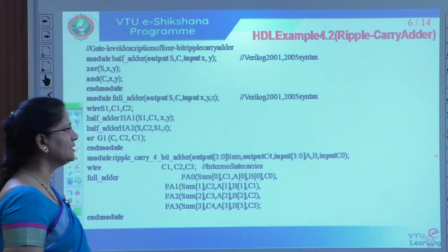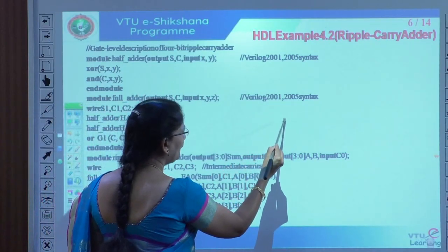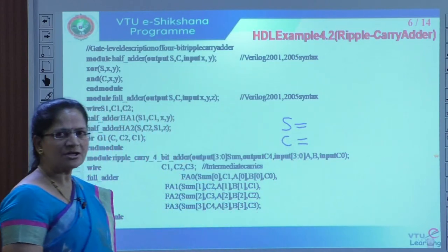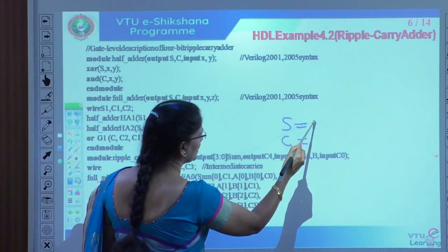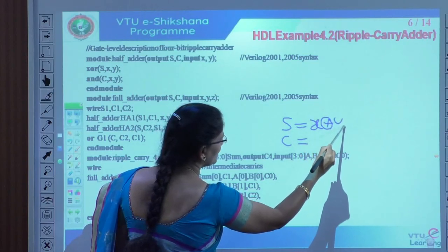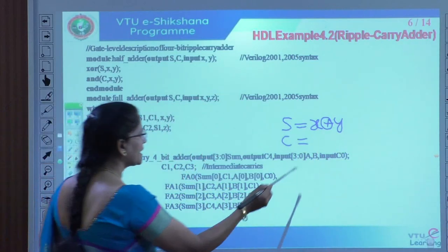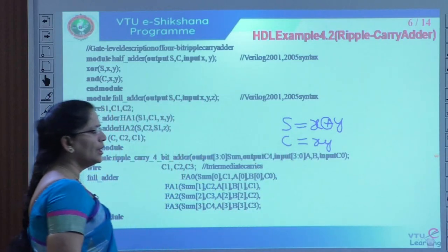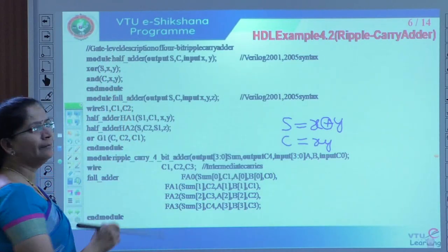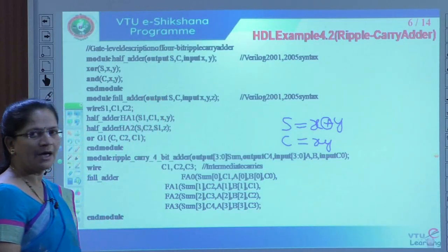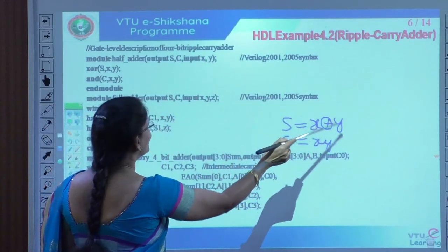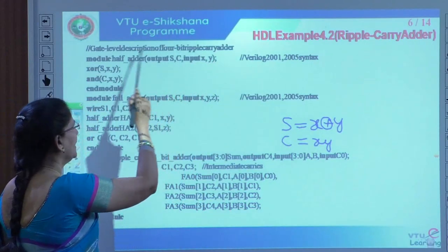All of you know that an adder — if we are writing a half adder — its function will first find a sum as well as a carry. You know the equation from the hardware part. If input is x XOR y, the sum equation is x XOR y, and the carry equation is x AND y. I am defining the module name as 'half_adder.' Output is defined by sum and carry. Input is defined by x and y, ending with a semicolon. Port list is over.